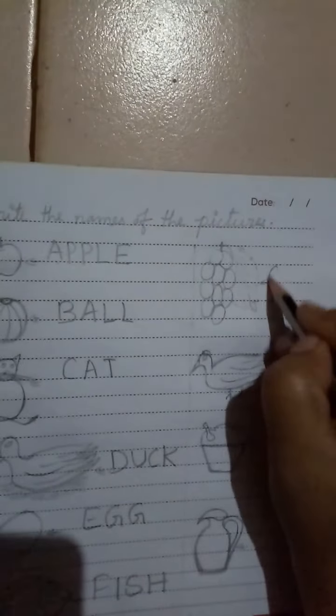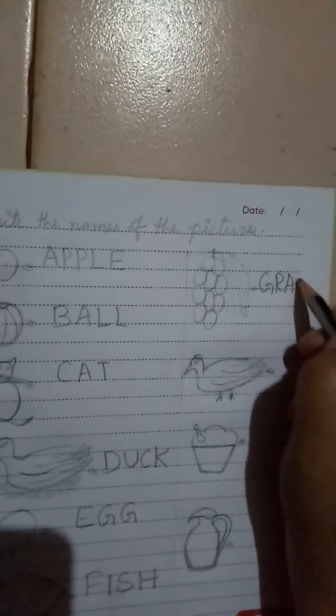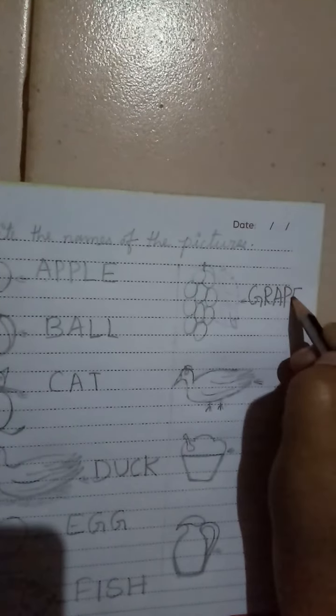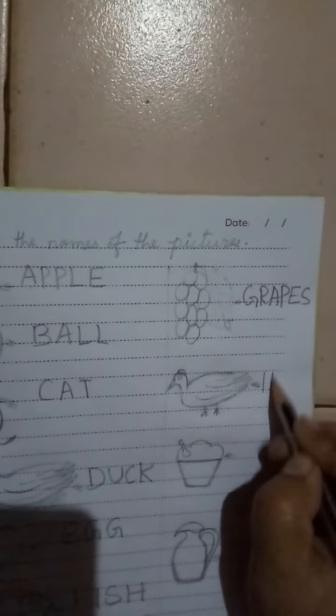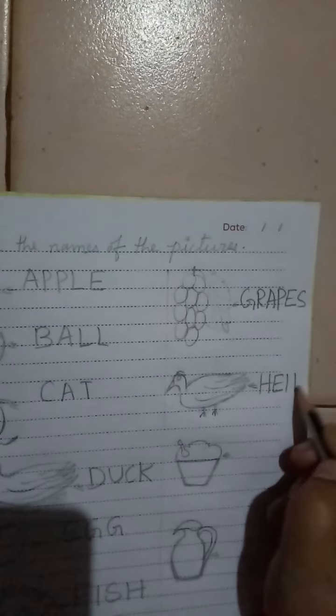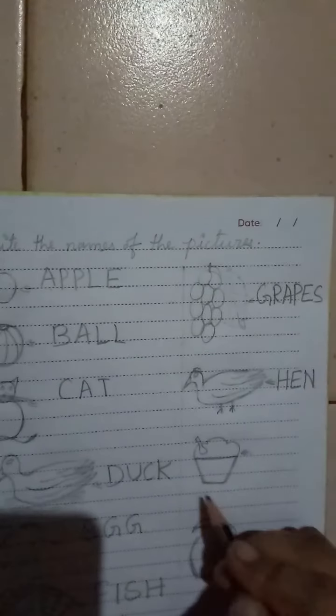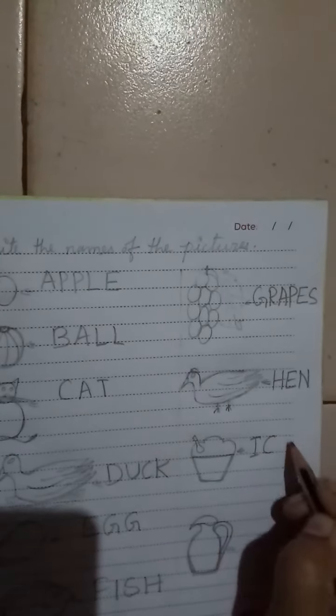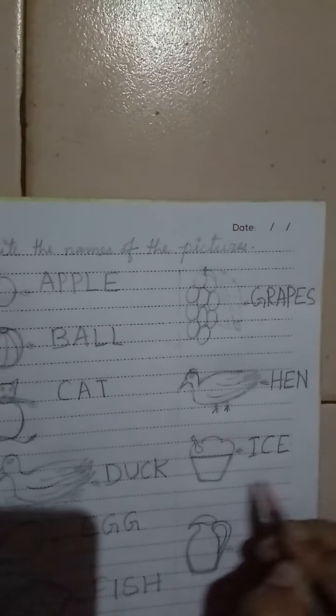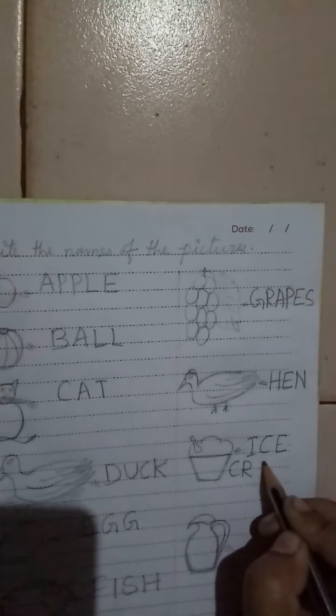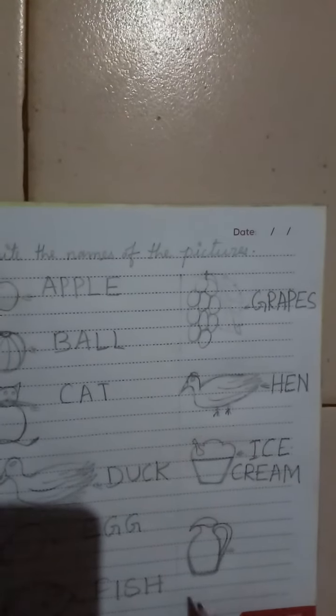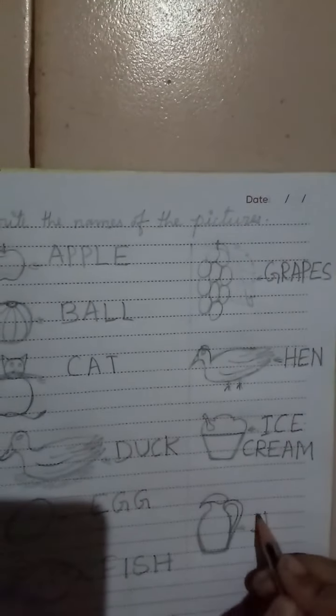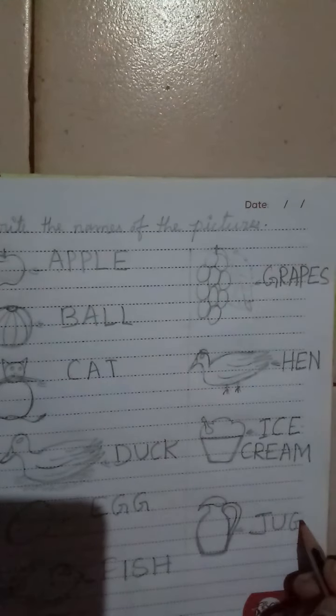Grapes: G, R, A, P, E, S. Grapes. Hen: H, E, N. Hen. Ice Cream: I, C, E, C, R, E, A, M. Ice Cream. Jug: J, U, G. Jug.